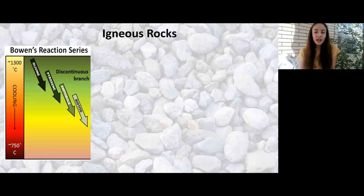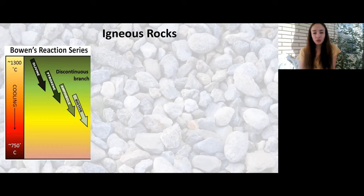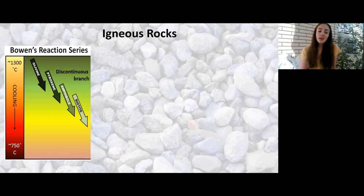The last thing I want to discuss is the Bowen's Reaction Series. Basically, as magma cools, different minerals precipitate out at different temperatures, and this happens in an order that never changes. It's useful when determining what temperature magma cooled at to form what minerals. The temperature decreases as we go down the reaction series. The first mineral to precipitate out of really hot magma is olivine; as the magma cools further, it will be pyroxene, then amphibole, and then biotite.